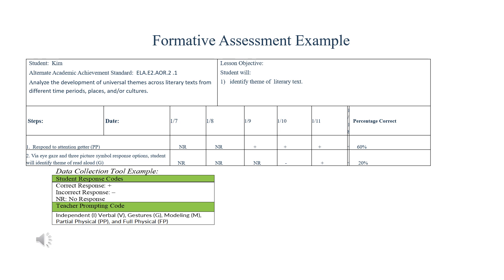In teaching, one would want to have an attention getter, and this is where you can code and look at those percentages correct — eventually wanting the student to respond to the attention getter 100% of the time. We also need to think about the student's consistent mode of communication. In this case, eye gaze is the mode of communication. For some students, we would begin with a field of two; in this case, there is a field of three — using eye gaze and three picture symbol response options, the student will identify a theme of a read-aloud.